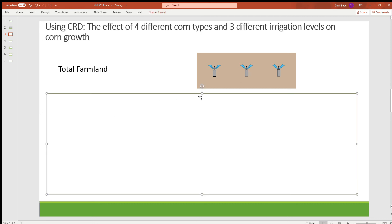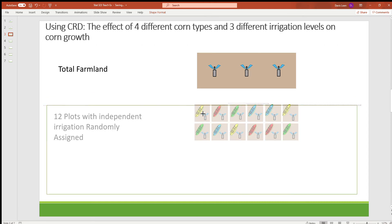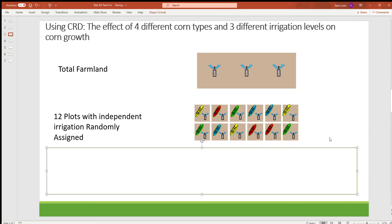If we have one instance of replication, we will have 12 different experimental units. And here's what this would look like where you have each plot that has its own irrigation system that can be controlled at the level, as well as the corn type that's planted there.